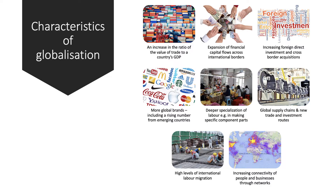It's important to understand some of the key characteristics of globalisation. What are the main features? There has been an increase in the ratio of trade — a lot more countries are now more open. The value of exports and imports as a share of GDP is very high, sometimes above 100% for some countries. There has also been an increase in the flow of financial capital across borders, both in terms of acquisition and foreign direct investment, and the rise in the number of global brands, including many from emerging developing countries.